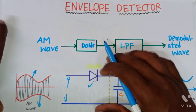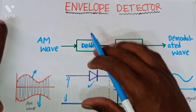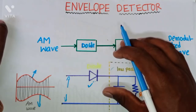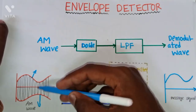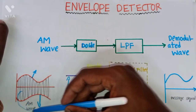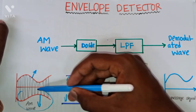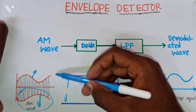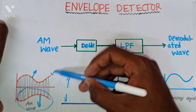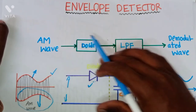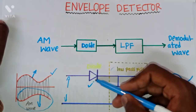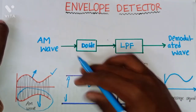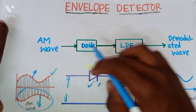A rectifier only allows positive half cycles and rejects negative half cycles. That means the negative half cycle — the negative sideband — will be completely rejected, and only the positive half cycle, that is the positive sideband, is allowed by this diode.